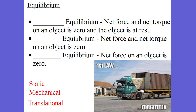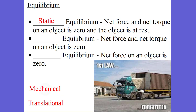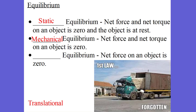The first equilibrium we're going to talk about is static equilibrium. Static equilibrium is when the net force and the net torque on an object is zero and the object is at rest — that's obviously why we call it static. The next is called mechanical equilibrium, where the net force and the net torque on an object is zero, but the object is not necessarily at rest.